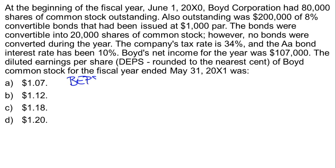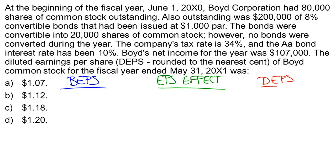There are three steps we're going to go through: first, calculate the basic earnings per share; then calculate the EPS effect of that convertible bond; and finally, calculate diluted earnings per share. Basic earnings per share is the income available to common shareholders divided by the weighted average number of common shares outstanding.